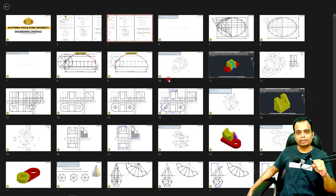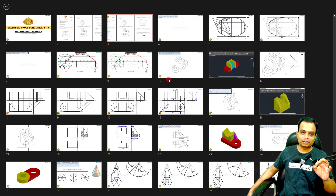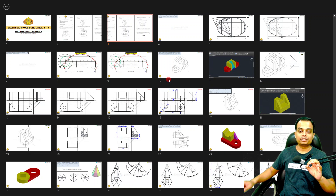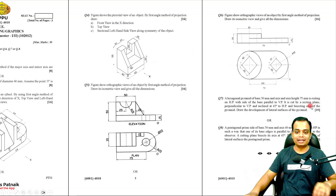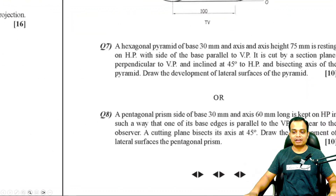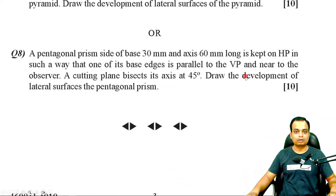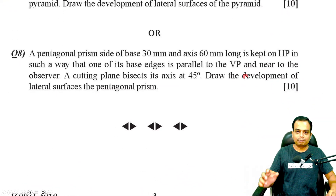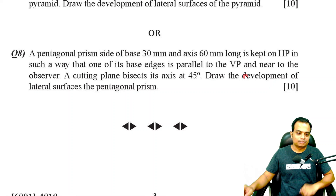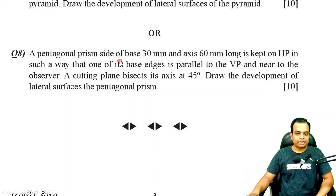This is going to be the final video, the final question in the series of videos on Pune University's 2023 question paper. The final problem is based on development of surface of hollow solids. A pentagonal prism with side of base 30 mm...